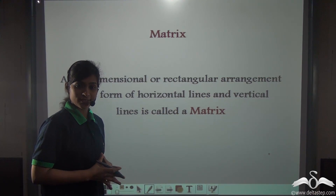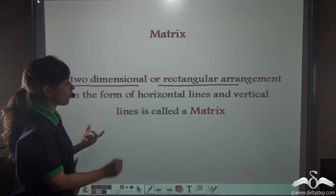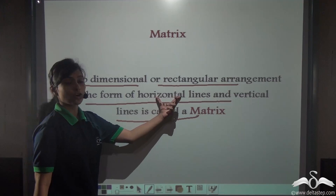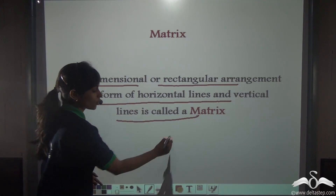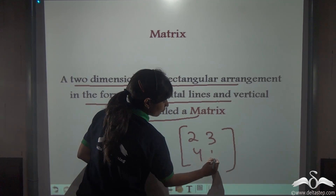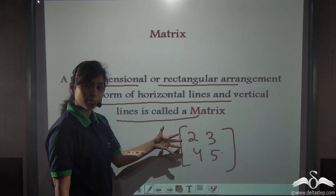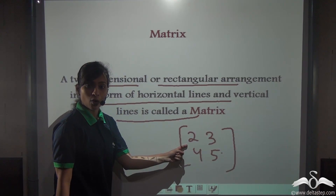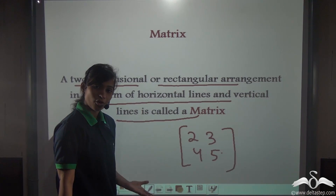You already know what a matrix is. A two-dimensional or rectangular arrangement in the form of horizontal lines and vertical lines is called a matrix, where horizontal lines represent rows and vertical lines represent columns. This matrix has the order M by N, where M represents the number of rows and N represents the number of columns.